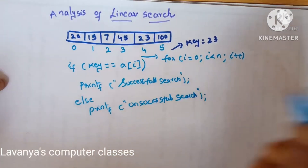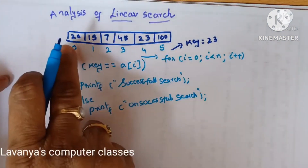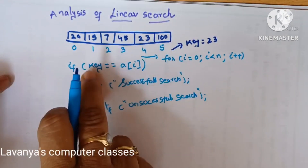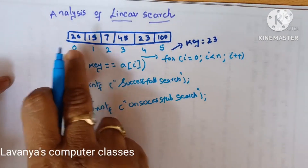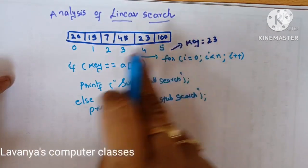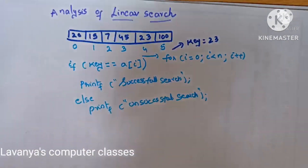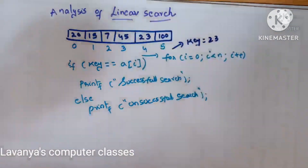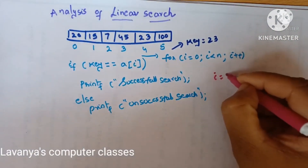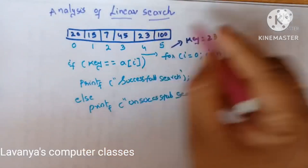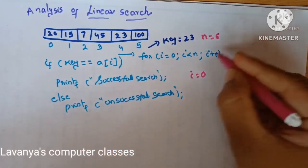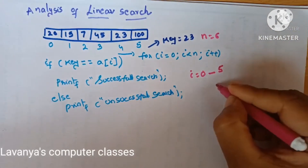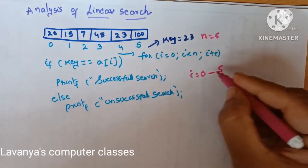This is a simple algorithm. Take the elements, loop from i value 0 to i less than n, and search each and every element with the key. Compare whether the key element matches the first element or not. What is n here? n equals 6, so i value runs from 0 to less than 5 — that is 0 to 5. What is the key element? Key element is 23.